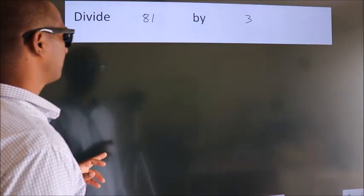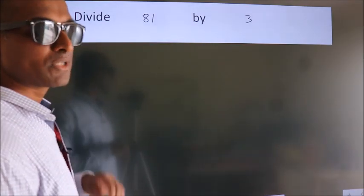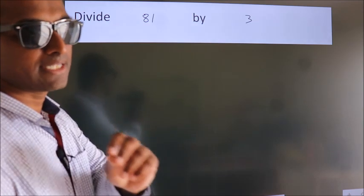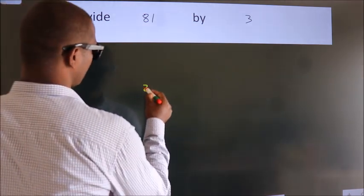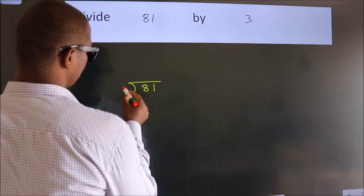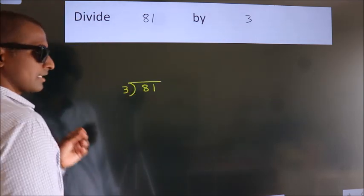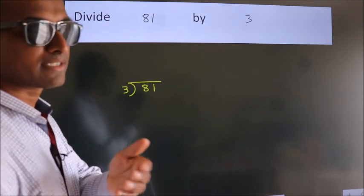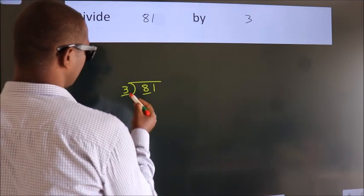Divide 81 by 3. To do this division, we should frame it in this way: 81 here, 3 here. This is your step 1. Next, here we have 8, here 3.